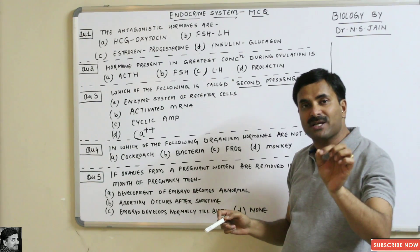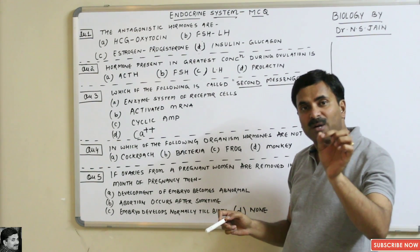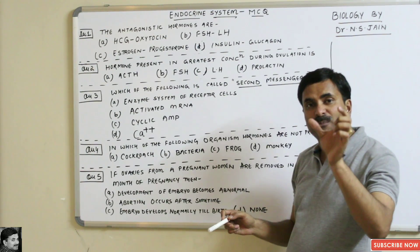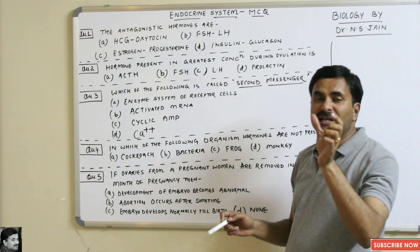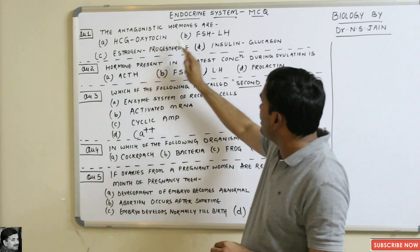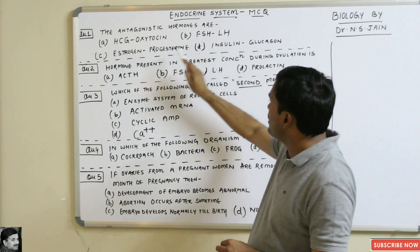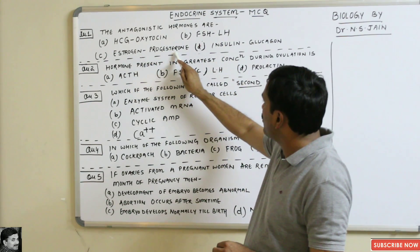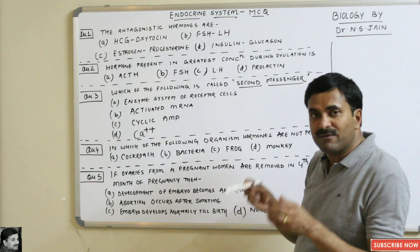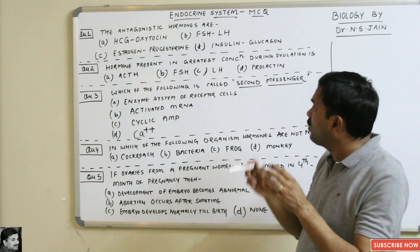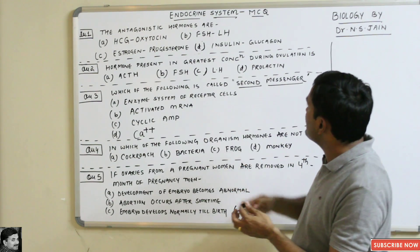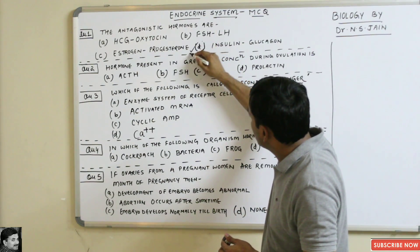Antagonistic means hormones which are acting opposite to each other — their functions are opposite to each other, and those are called antagonistic hormones. The options are: HCG and oxytocin, FSH and LH, estrogen and progesterone, or insulin and glucagon. You have to choose which is an antagonistic pair.